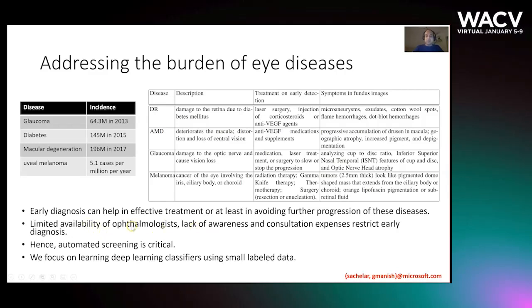The problem is limited availability of ophthalmologists, lack of awareness and consultation expenses, which basically restrict early diagnosis. Hence, automated screening is very important. So the question that we want to answer is: can the advances in deep learning be useful to detect these eye diseases automatically from fundus images?